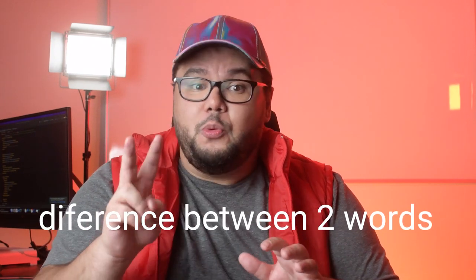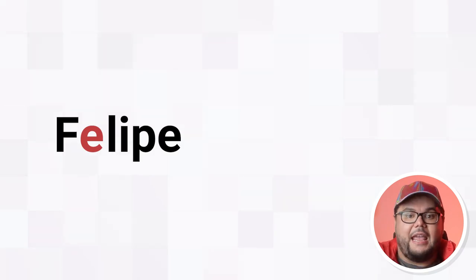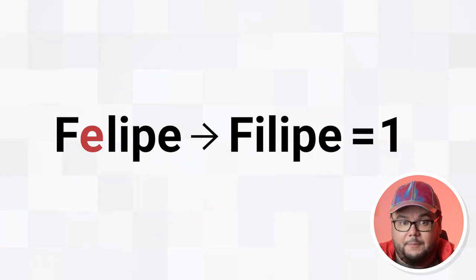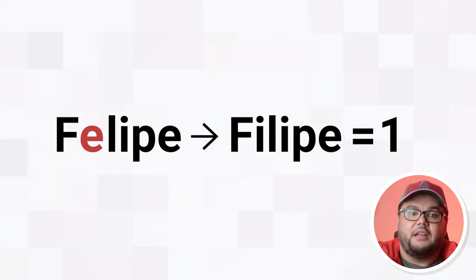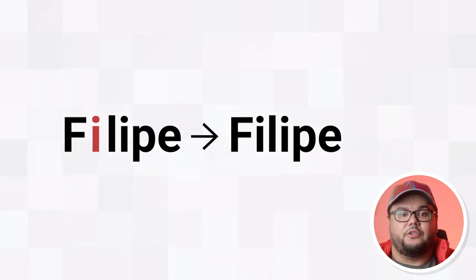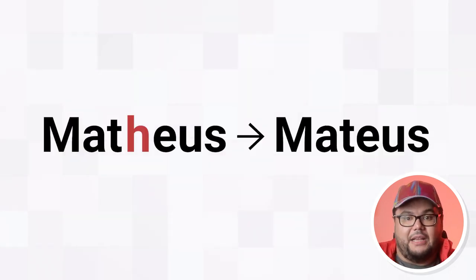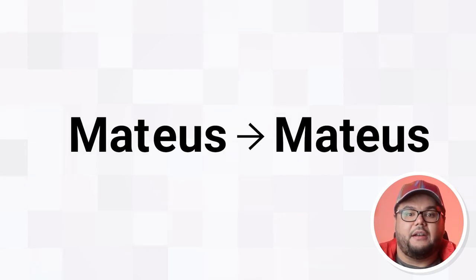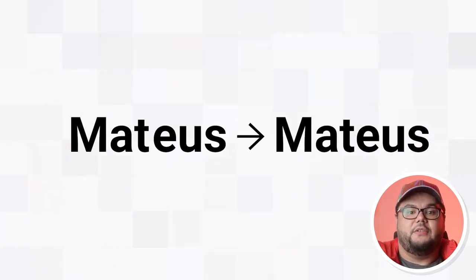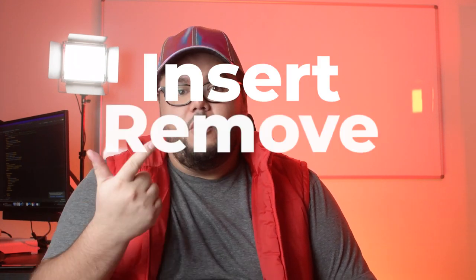Technically, Levenshtein distance measures the difference between two words. For instance, the distance between the name Felipe and Filipe is one, as you just need to replace the first letter E with I to transform one word into another. The same thing happens with Mateus and Mateus — you only need to remove one letter to convert the first name into the second. The Levenshtein distance allows only three types of operations: insert, remove, and replace.